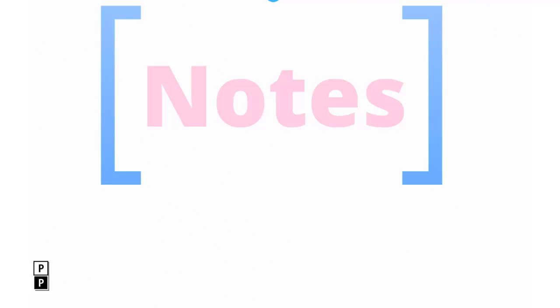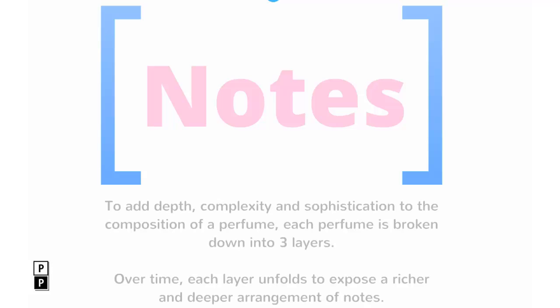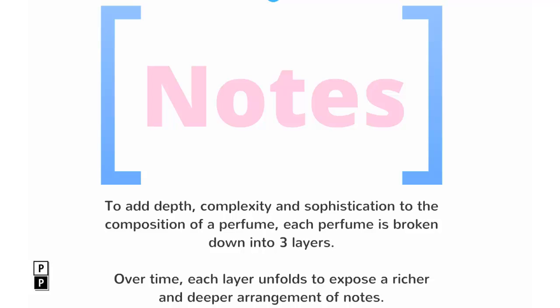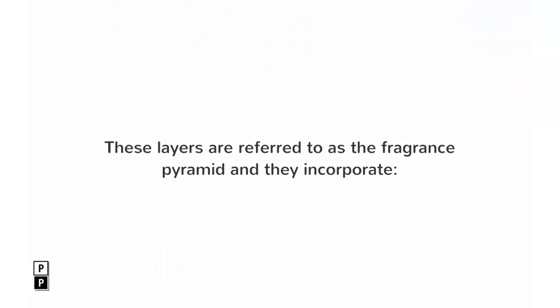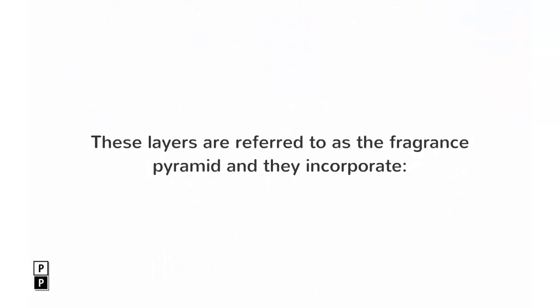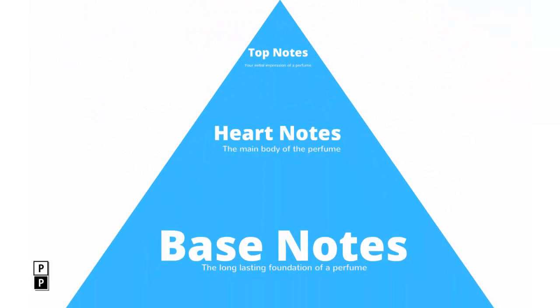Now that we know that scents are called notes and a combination of notes creates a chord, we can move on to the composition of the modern day perfume. To add depth, complexity and sophistication, each perfume is broken down into three layers. These layers are referred to as the fragrance pyramid, and they incorporate top notes, which are your initial impressions of a perfume, middle or heart notes, which represent the main body, and finally base notes, which provide the long-lasting foundation for the perfume.